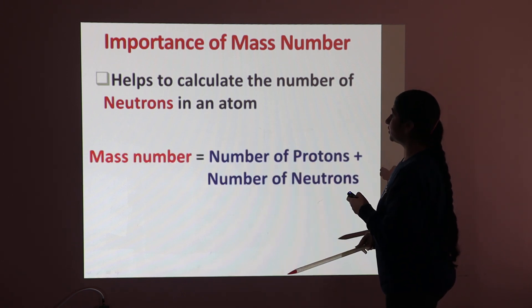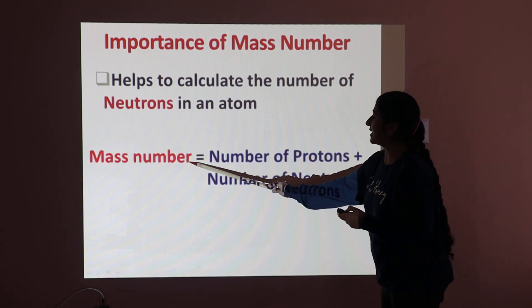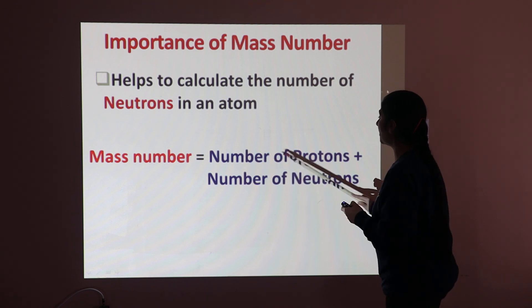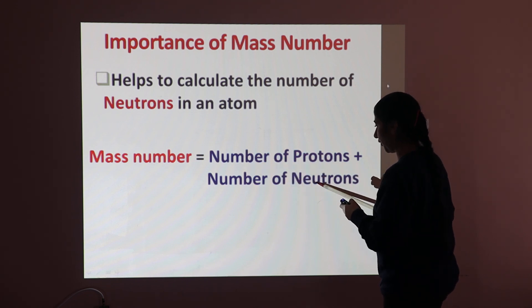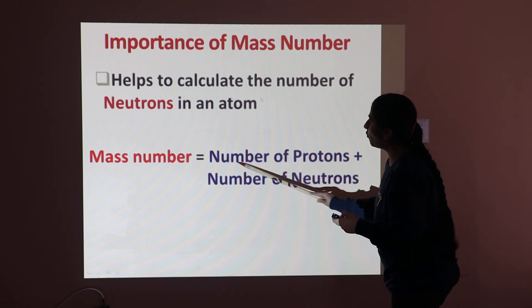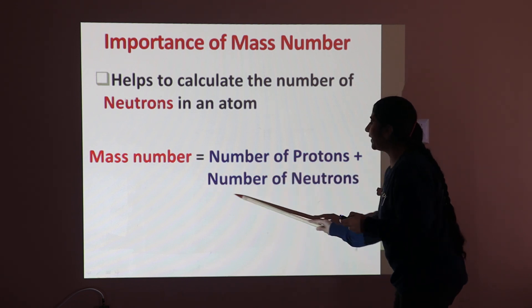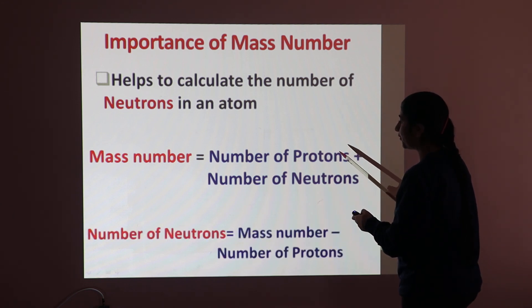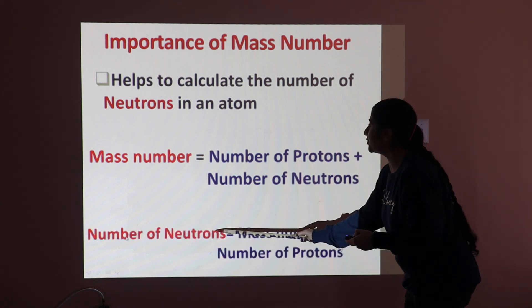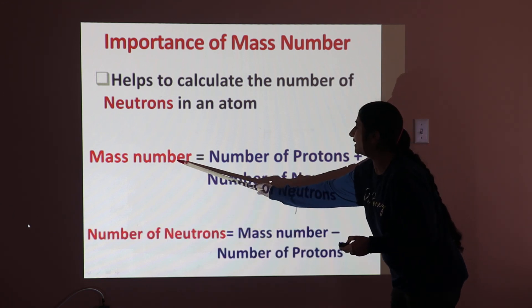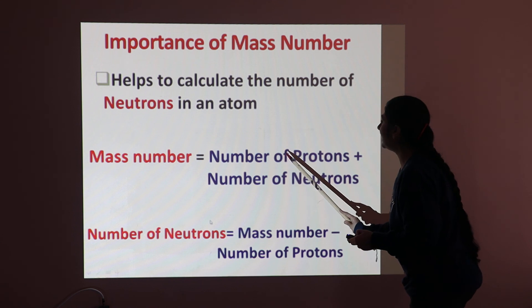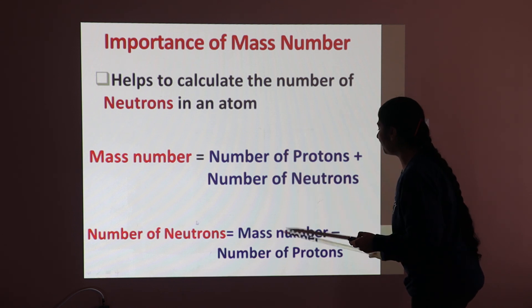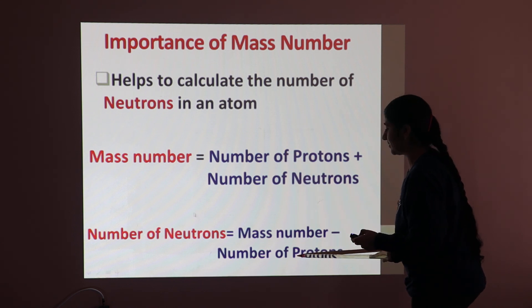Since mass number is equal to the number of protons plus the number of neutrons, if you want to calculate the number of neutrons, then: number of neutrons equals mass number minus number of protons.